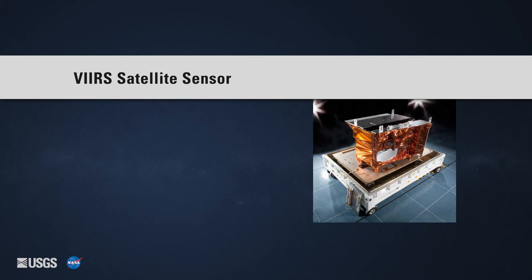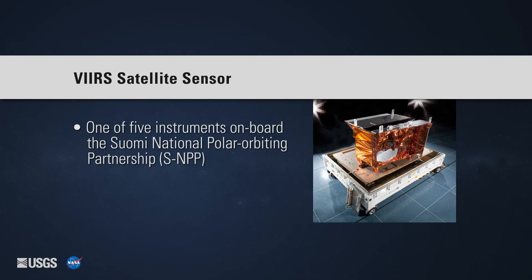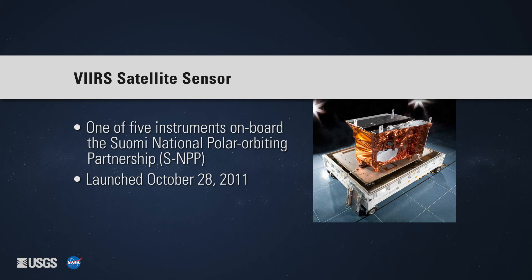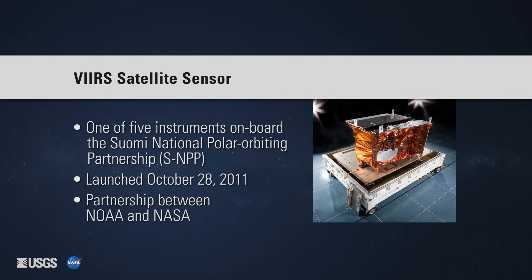The VIIRS satellite sensor is one of five instruments onboard the Suomi National Polar-orbiting Partnership satellite. SNPP was launched on October 28, 2011, and is the first in a series of four Joint Polar Satellite Systems satellites. VIIRS is part of a collaborative mission between the National Oceanic and Atmospheric Administration, NOAA, and NASA.